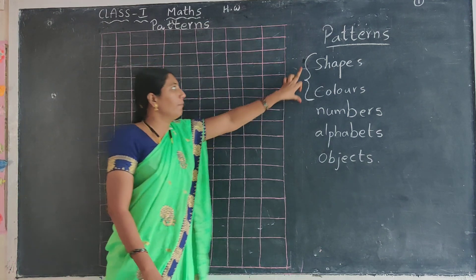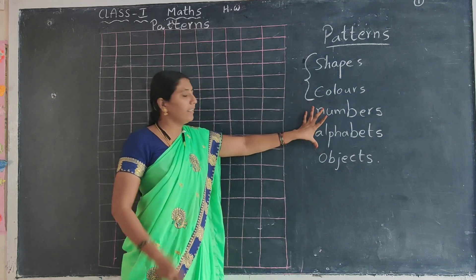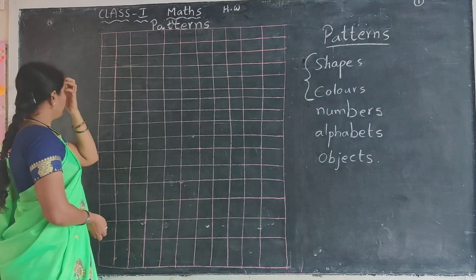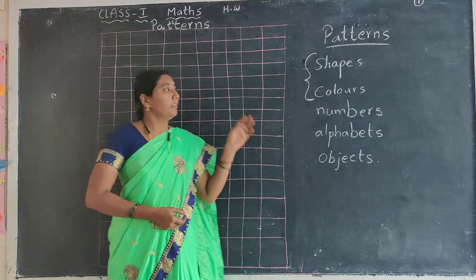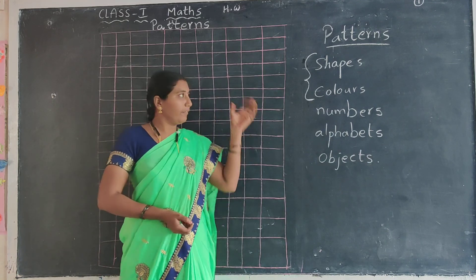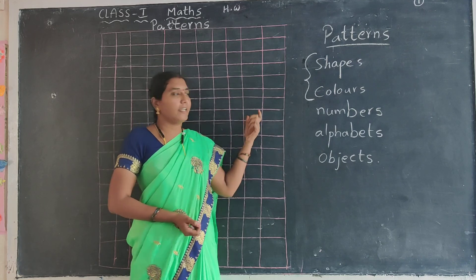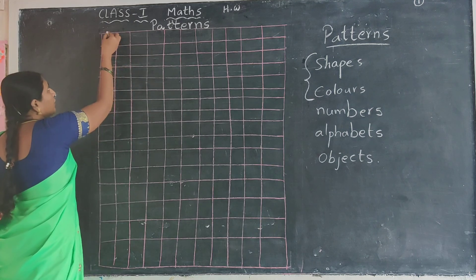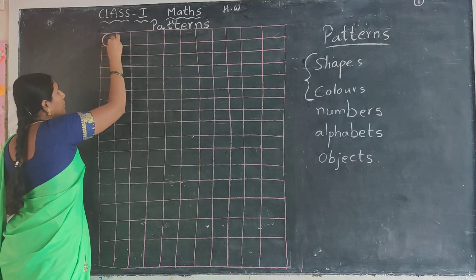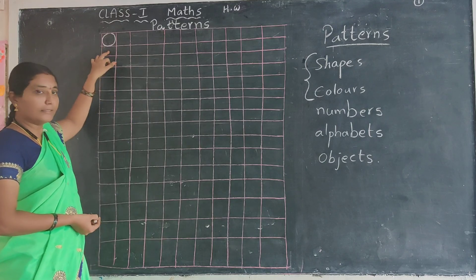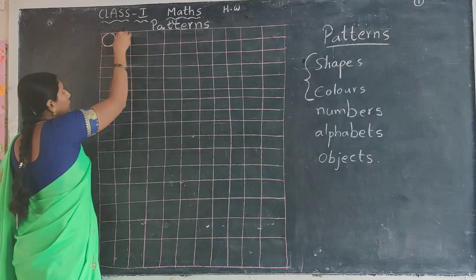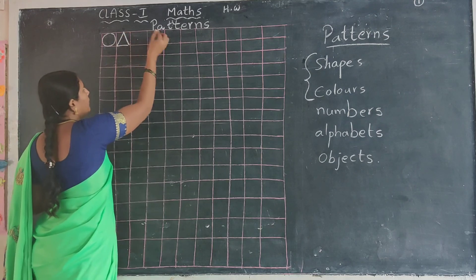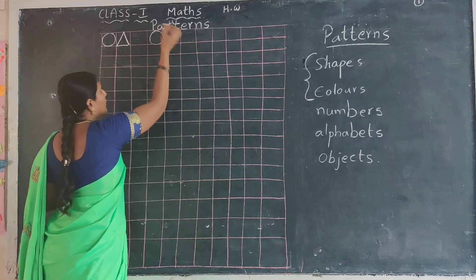Today's homework is how to form patterns in shades and colours only. See here — write the heading 'Patterns' and next, please note these patterns. For example, if you draw a chain of shapes, you have to check the pattern in the right direction.